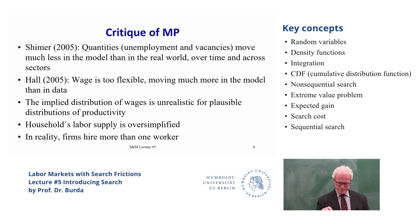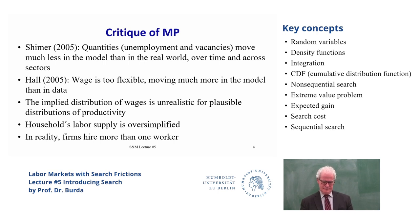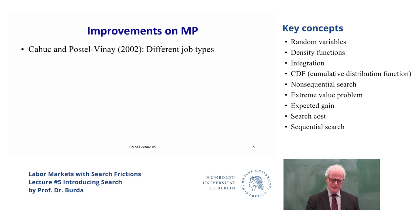Of course, the bargaining problem and wage determination look different if the firm has more than one worker and workers are naturally at a bargaining disadvantage with respect to the employer. This could also lead to more wage rigidity if the worker can be threatened with being fired or playing one worker off the other. This sort of outcome could lead to a type of rigidity in the wage. So there are many ways to improve on the general thrust of the MP model.